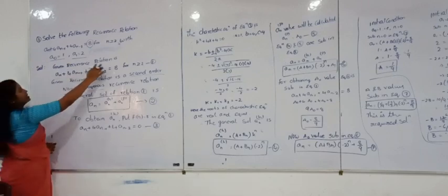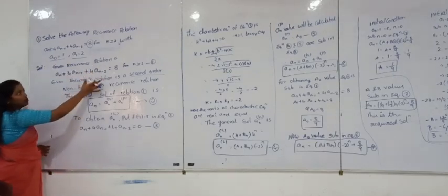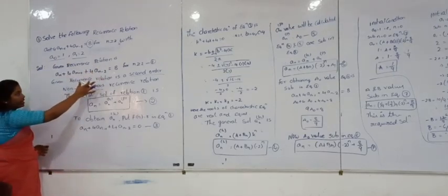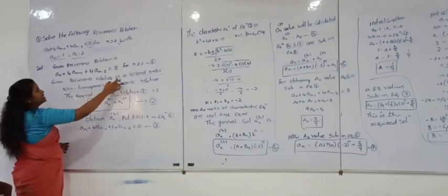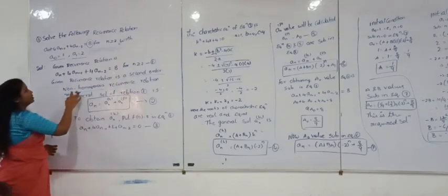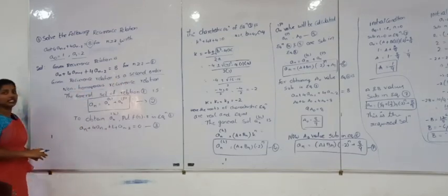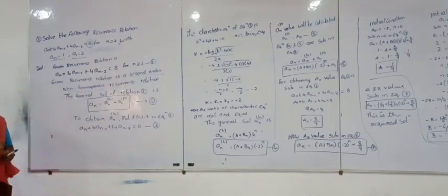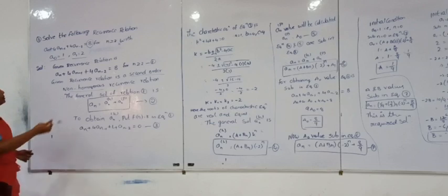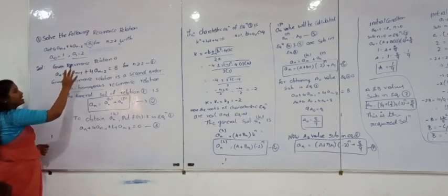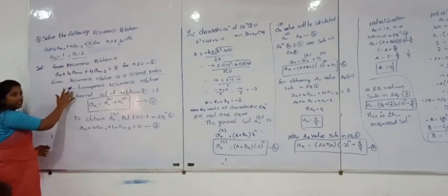Next, the given recurrence relation is a second order non-homogeneous recurrence relation. Why is this a second order non-homogeneous recurrence relation? Because two initial conditions are given.